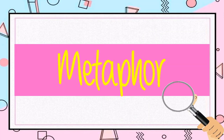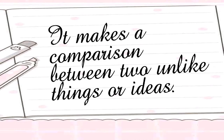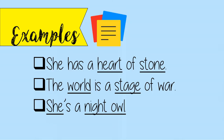Metaphor makes a comparison between two unlike things or ideas. Examples: she has a heart of stone — a heart is being compared to a stone. The world is a stage of war — the world is being compared to a stage. She's a night owl — she is being compared to a night owl.